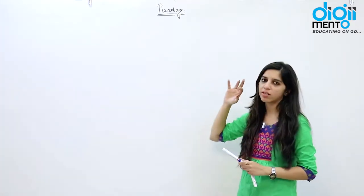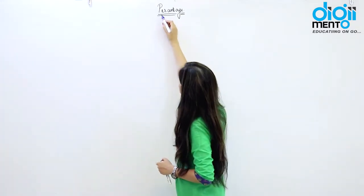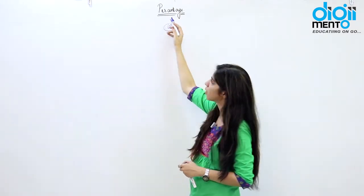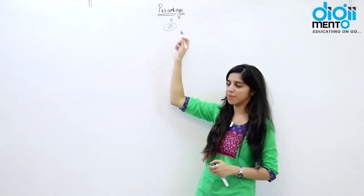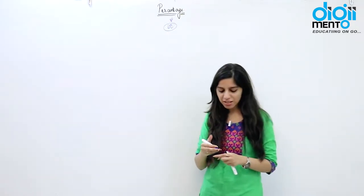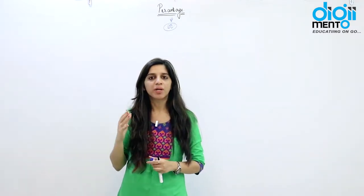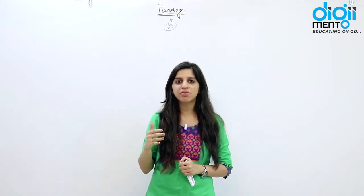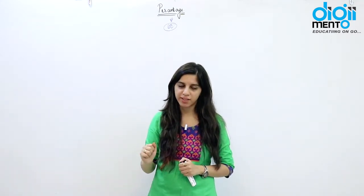Firstly, we understand what does a percentage mean. The word 'percent' — 'cent' represents 100. In French, 'cent' is 100. So percent means per 100, that is, for every quantity we are taking reference as 100. We are trying to scale down everything with reference to 100.